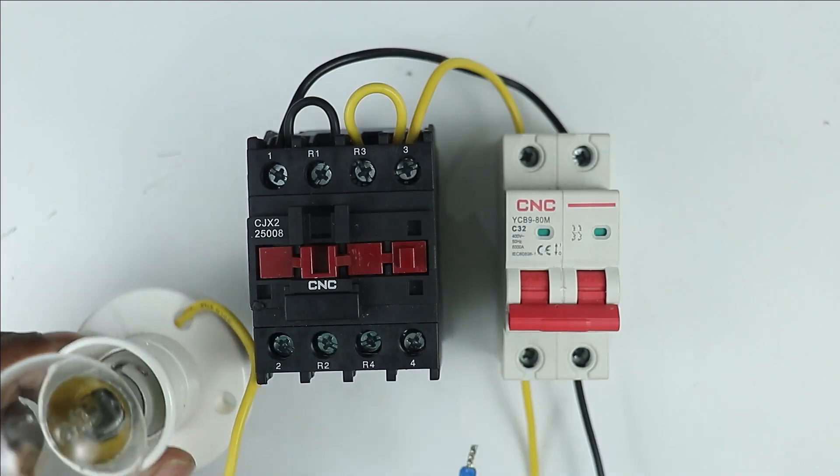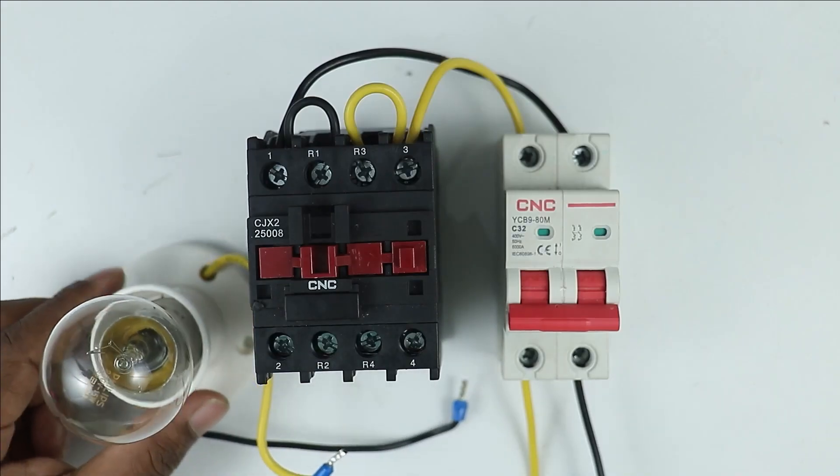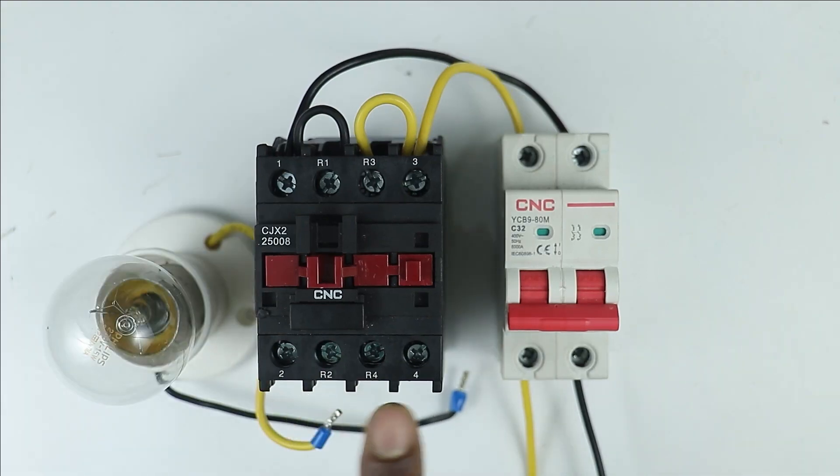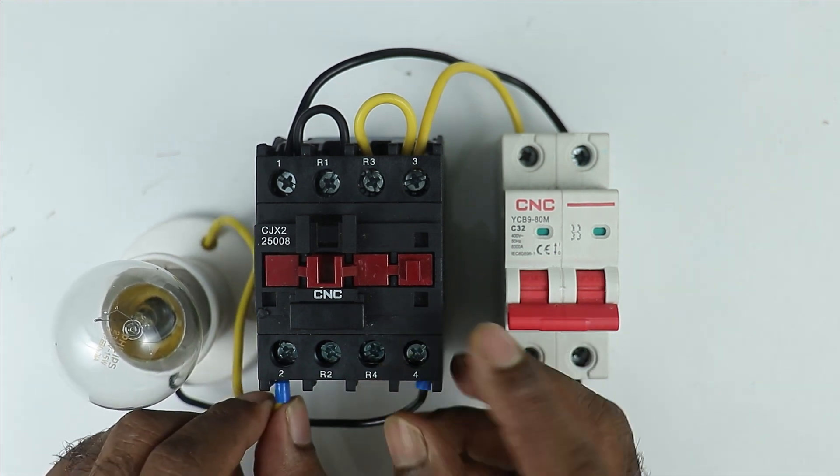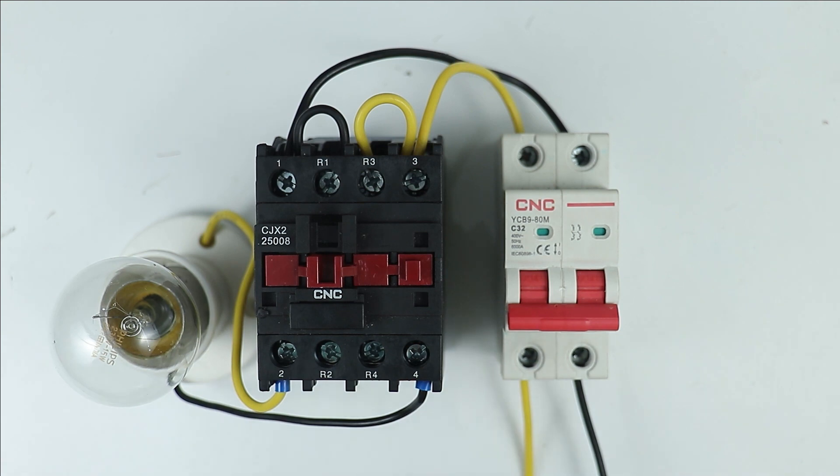Now in the output terminal of contactor, at the NO contact present over there, two number and four number terminals are of NO contact. To both these terminals, connect this lamp. This lamp is our main lamp. It means when this gets turned on, it is sufficient for whole room.